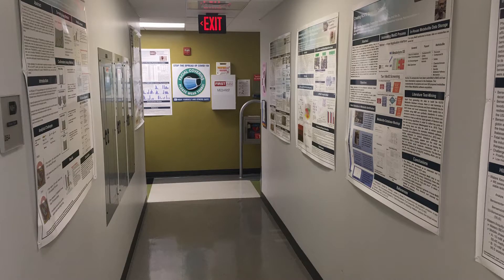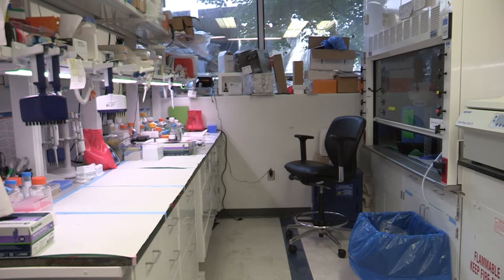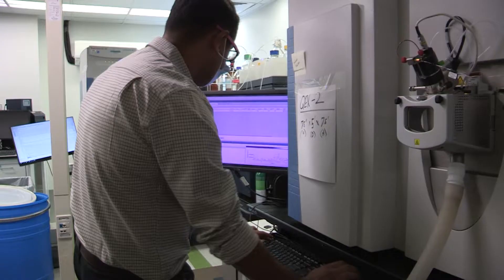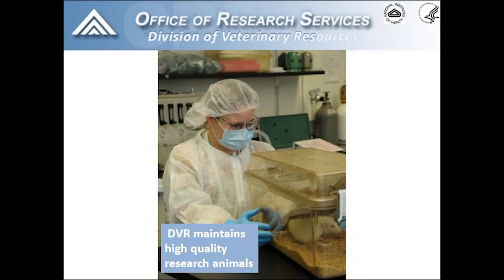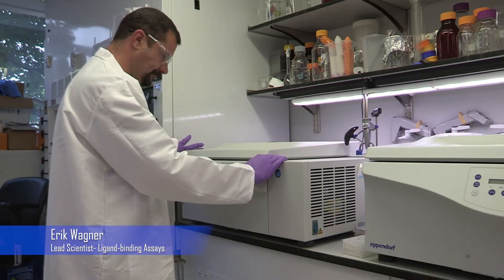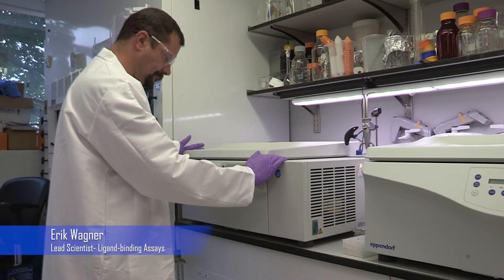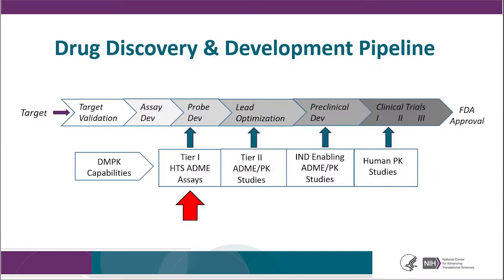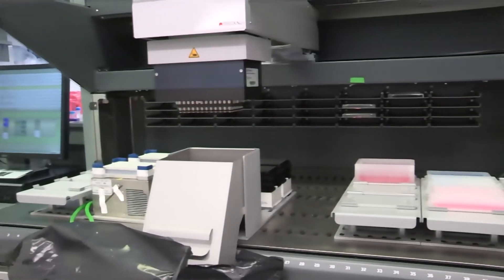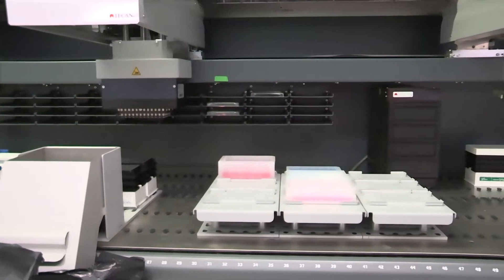Welcome to the DMPK lab. Our facilities are composed of four main sections: the wet lab, the mass spec lab, the tissue culture lab, and the animal facility. Let's start with the wet lab first, where our Tier 1 ADME assays are conducted. Tier 1 ADME assays are developed to support early stage projects. We support chemists in the TDB, ETB, APP, and chemistry technology branches who work on a wide variety of drug discovery projects here at NCATS.